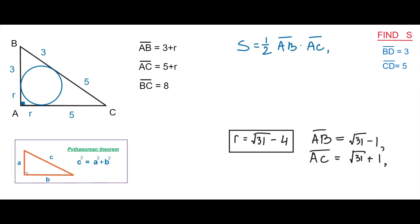So the area of a right triangle equals segment AB times segment AC divided by 2. Putting the values of segments AB and AC into this formula, we can calculate the area. S equals square root of 31 minus 1 times square root of 31 plus 1 divided by 2, which equals 31 minus 1 divided by 2, equals 15.